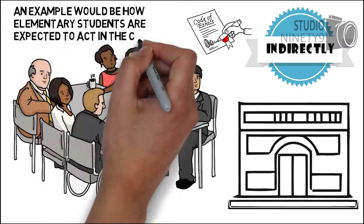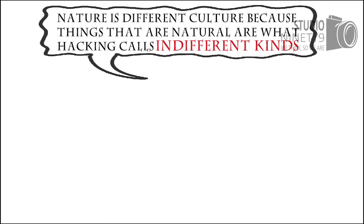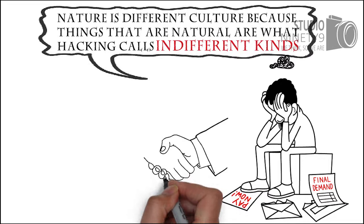Hacking argues that nature is different from culture because things that are natural are what Hacking calls indifferent kinds. Indifferent kinds do not have looping causations and do not care how we interact with them.